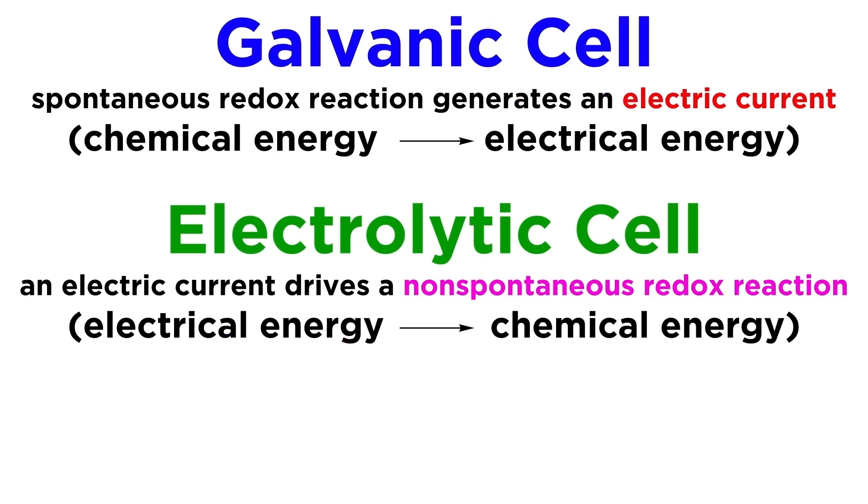So the same principles of oxidation and reduction and electron flow that are present in galvanic cells also apply in electrolytic cells. The two just run in opposite directions. One from chemical energy to electrical energy, and the other one from electrical energy to chemical energy.